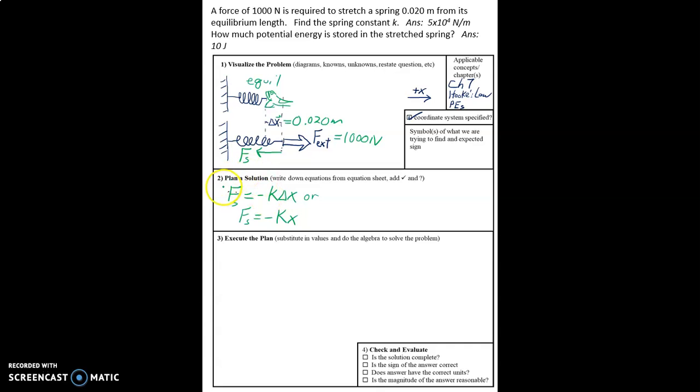So this is what we're going to use for, we'll call it part A, for finding the spring constant. And call that part A, and this part B. So let's go ahead and execute part A.